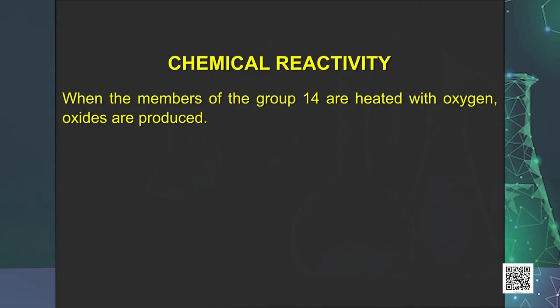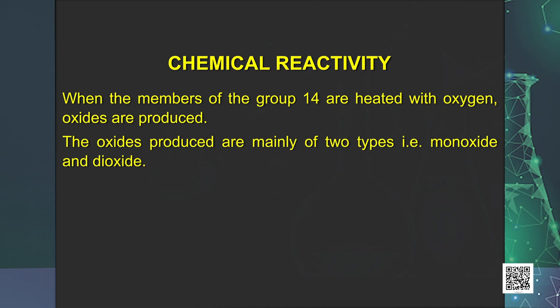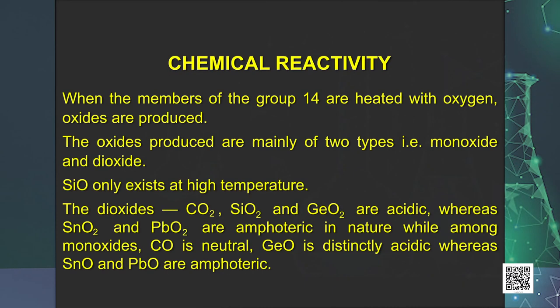Next, we will learn about the chemical reactivity of group 14 elements. When the members of group 14 are heated with oxygen, oxides are produced. The oxides produced are mainly of two types: monoxide and dioxide with molecular formula MO and MO2 respectively. SiO only exists at high temperature. Oxides in higher oxidation states of elements are generally more acidic than those in lower oxidation states. The dioxides CO2, SiO2 and GeO2 are acidic whereas SnO2 and PbO2 are amphoteric in nature. Among monoxides, CO is neutral, germanium monoxide is acidic, whereas tin oxide and lead oxide are amphoteric.